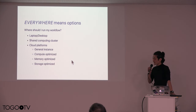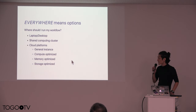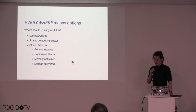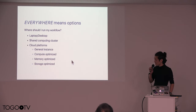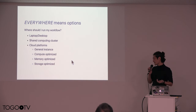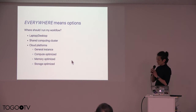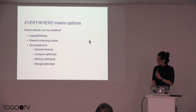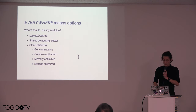We have a laptop, a desktop computer, a shared computing cluster which is a bit bigger than your desktop, and we also have cloud platforms like Amazon, Google, Microsoft, or other industrial clouds. We also have academic clouds provided by universities. Cloud platforms have many options for instance size and specifications. For example, these are instance types from Amazon Web Service — you can use a general instance, a compute-optimized instance, memory-optimized, or storage-optimized.